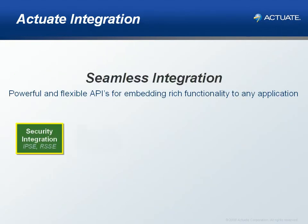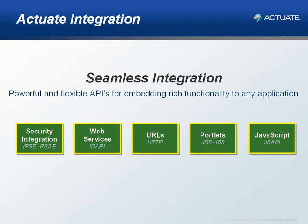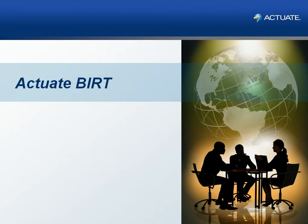Actuate's security model provides an industry-proven strategy that has been deployed in both large commercial applications and government agencies. Actuate provides a comprehensive set of APIs to suit any embedded application requirement, allowing for truly transparent integration. BIRT provides the foundation for building Actuate-powered rich internet applications, or RIAs, which can be embedded to your application.